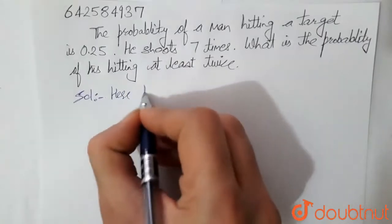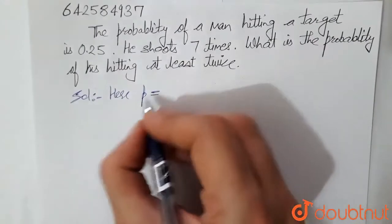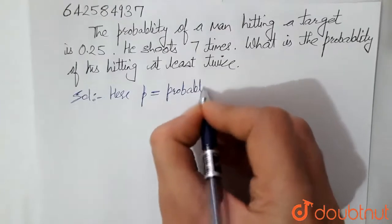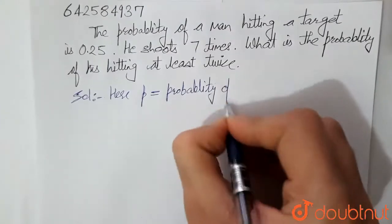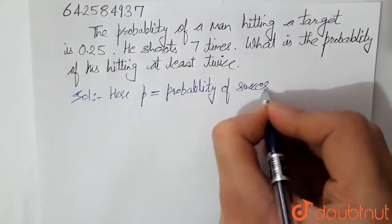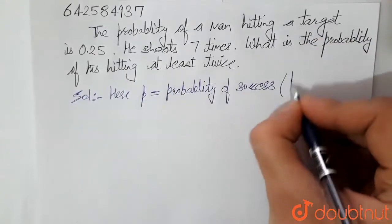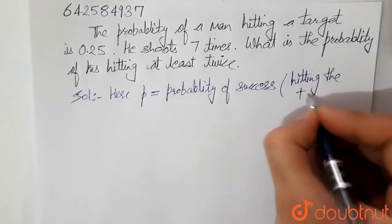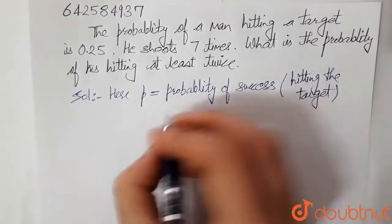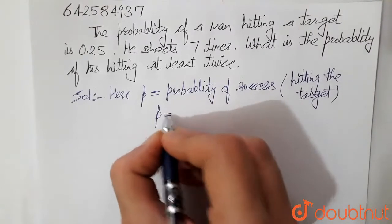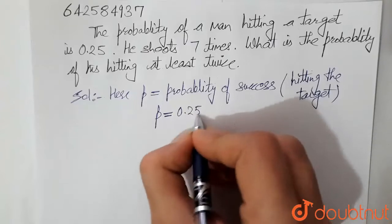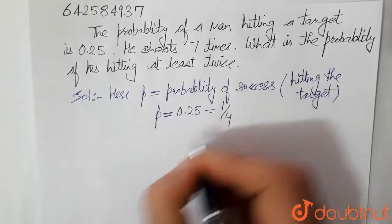Here, let small p equal to probability of success. Probability of success means here hitting the target. Then we have been given probability p of success is 0.25, that is equal to 1 by 4.